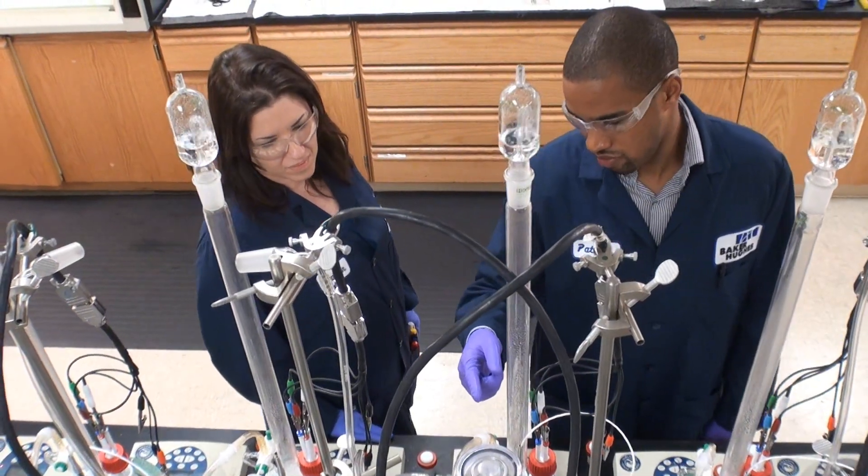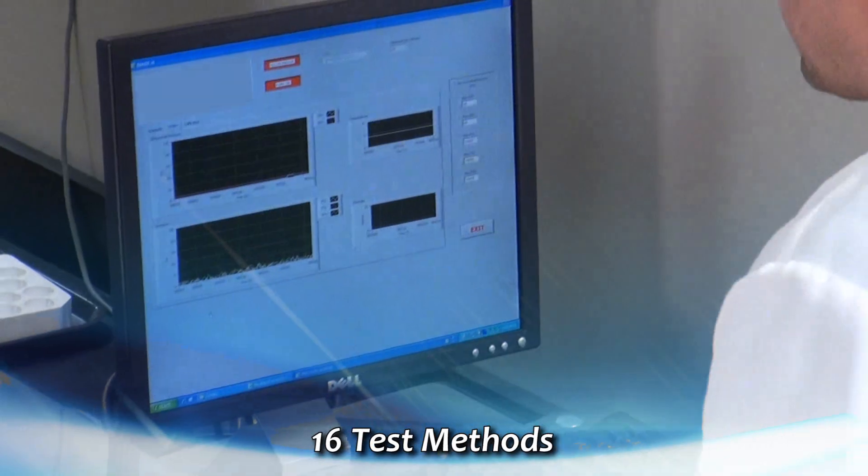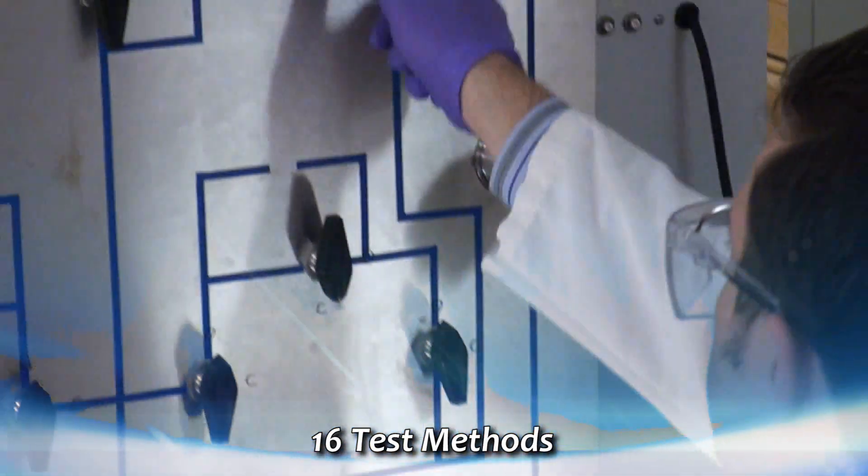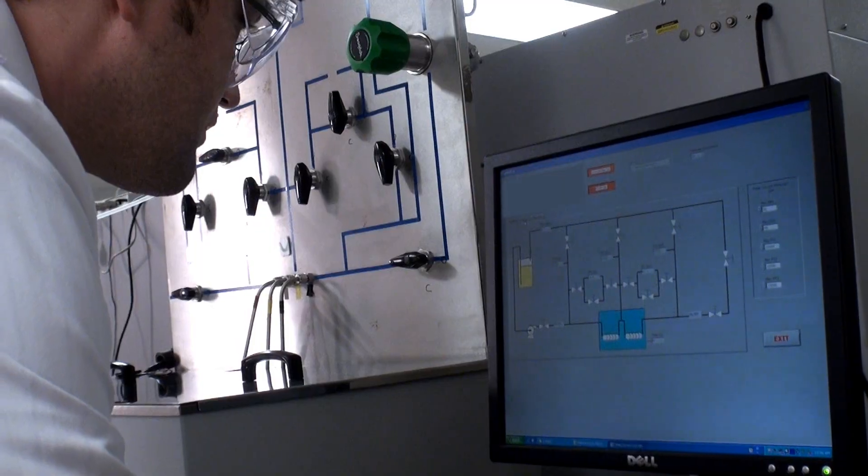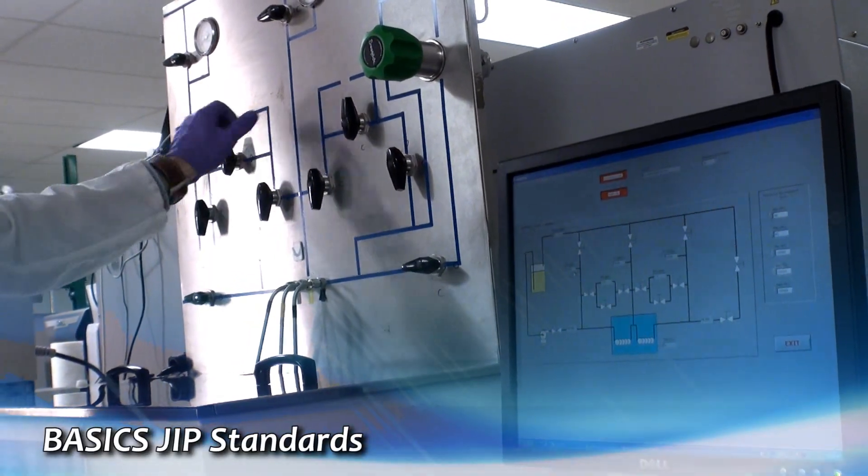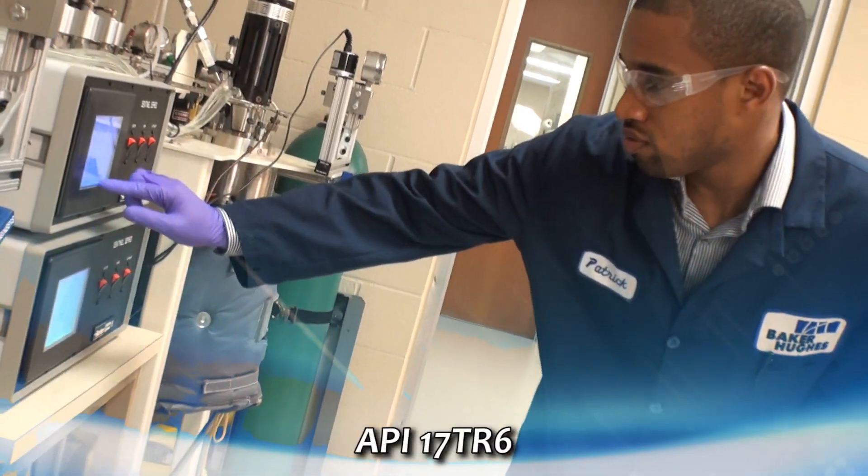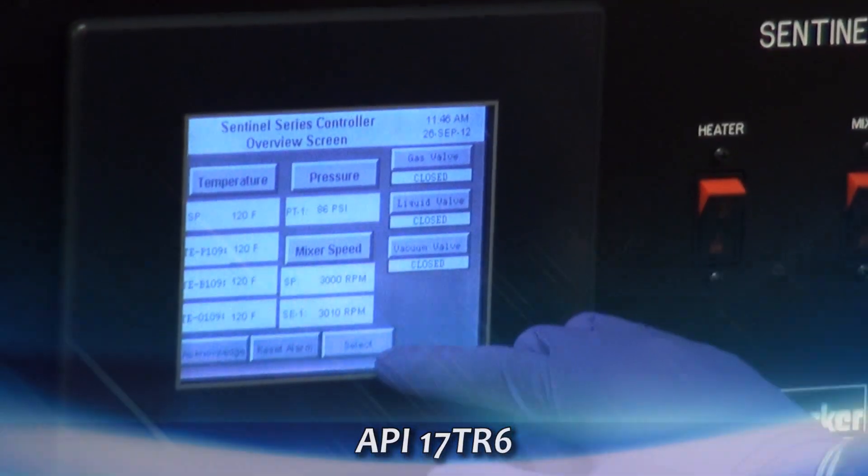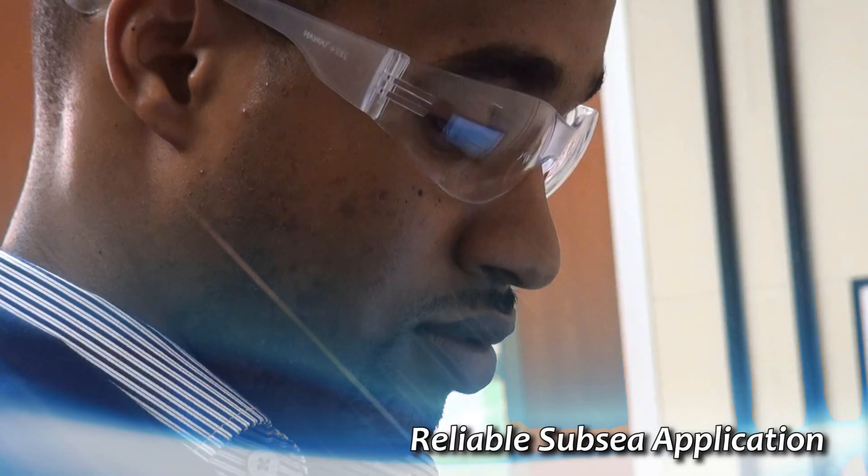Baker Hughes certifies all Fathom subsea chemicals through a process involving 16 different laboratory tests. Our 16 test methods are built upon the standards recommended by the joint industry project, BASICS, Blockage Avoidance and Subsea Injection and Control Systems, and published in API specification 17TR6 to ensure each chemical product is qualified for reliable subsea application.